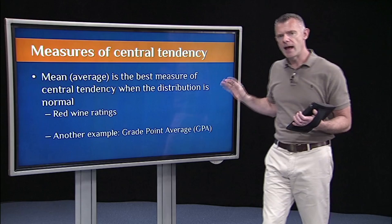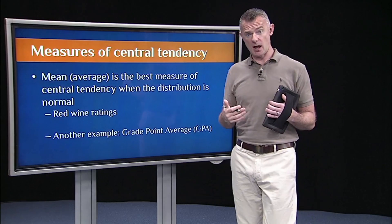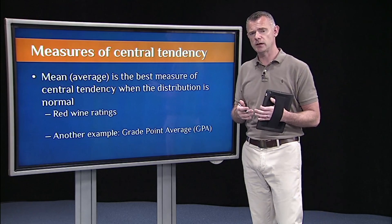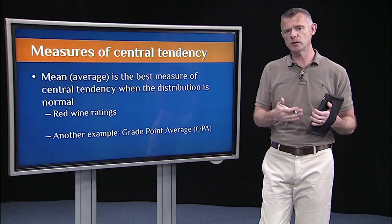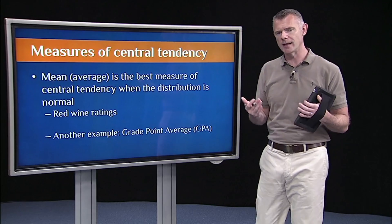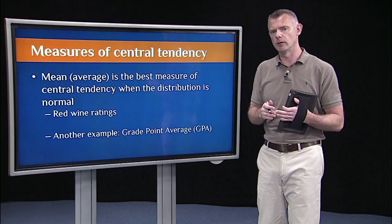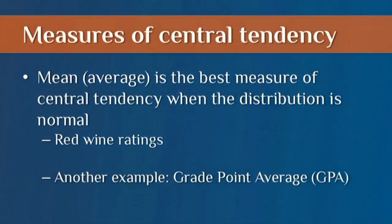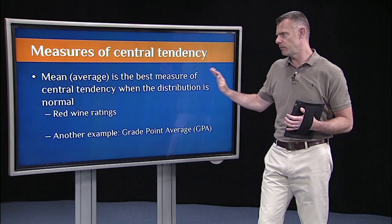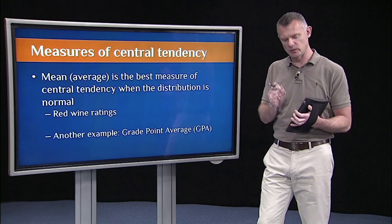The mean or average is by far the most common measure of central tendency used in statistics. It's the one we're going to rely on the most in this course and in any intro stats course. Classic examples include the red wine ratings or your grade point average. The mean is best when you have a normal distribution.